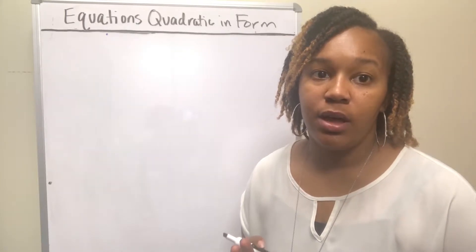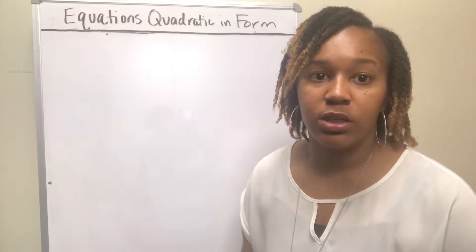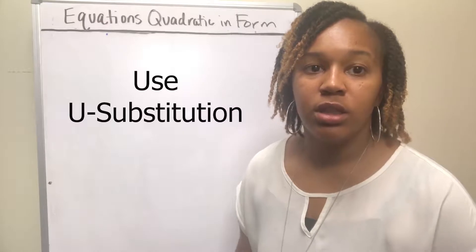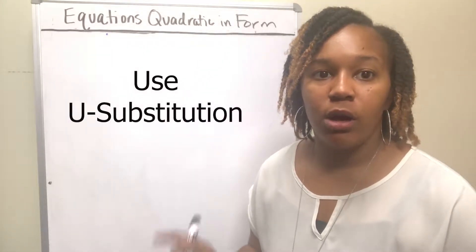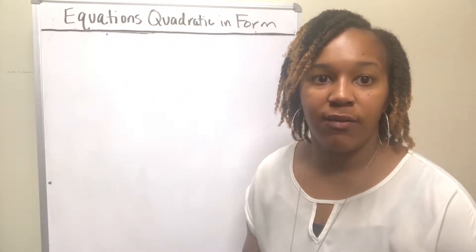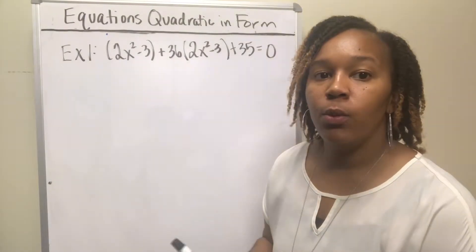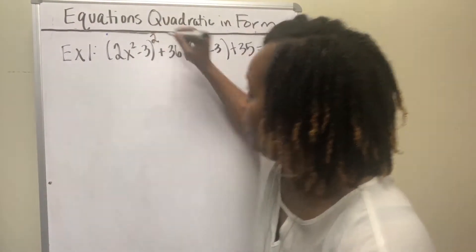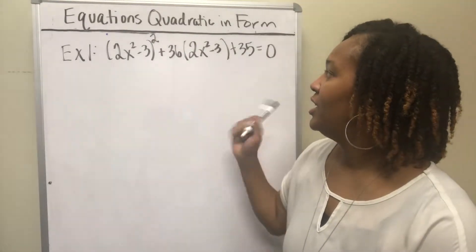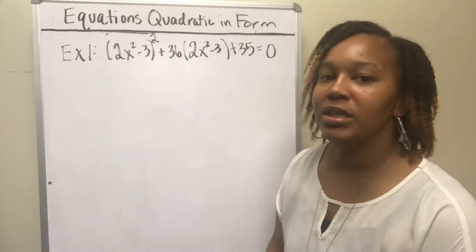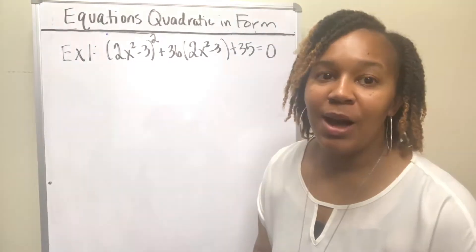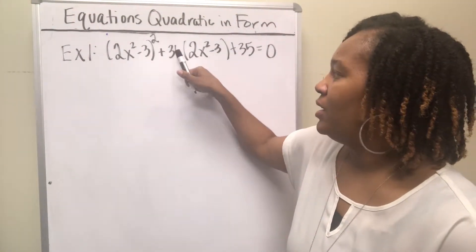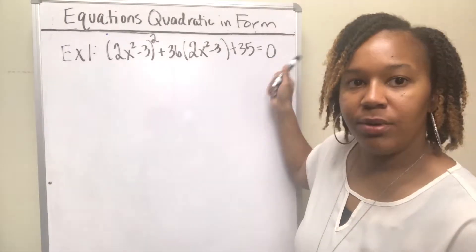Whenever you have an equation that's quadratic in form, you have to use what's called u-substitution. So let's look at example one. We want to solve (2x² − 3)² + 36(2x² − 3) + 35 = 0. This almost looks like a quadratic equation because we have something squared plus a number times that same thing plus a number equals zero.